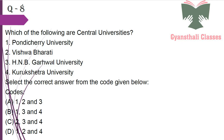Which of the following are central universities? Pondicherry is a central university; Vishwa Bharati is a central university; HNB Garhwal is a central university; Kurukshetra is not a central university. So the answer is 1, 2 and 3.